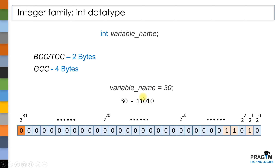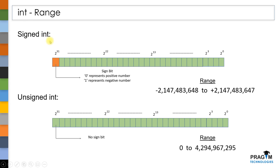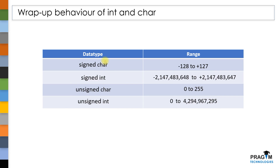An integer variable with signed type modifier has one bit reserved to store the sign of the value and it can store up to 2^31 negative values and 2^31 positive values. Coming to unsigned int, here we don't have any bit reserved to store the sign of the value, and it can store up to 2^32 positive values. We know that character and integer variables are capable of storing only values within their range — so what happens if we store a value out of this range?